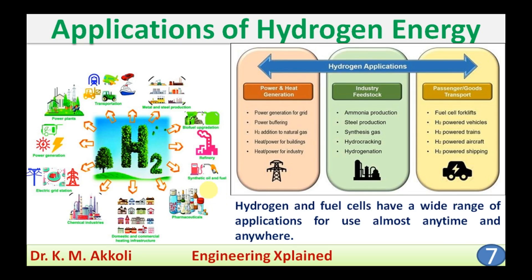Hydrogen energy or fuel cell applications can be classified into three types mainly: first, power and heat generation, which includes grid power buffering, H2 addition to natural gas, heat and power for buildings, heat and power for industry, and use as an industrial feedstock for ammonia production, steel production, synthesis gas, hydrocracking, and hydrogenation. Second, passenger and goods transport — fuel cell forklifts, H2 power vehicles, H2 power trains, H2 power aircraft, and H2 power shipping.